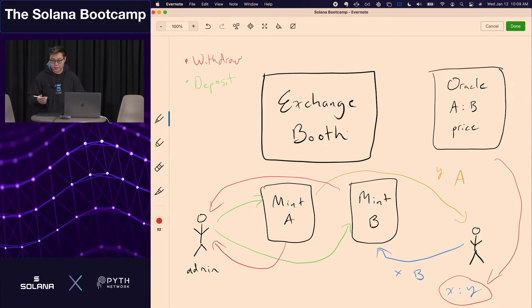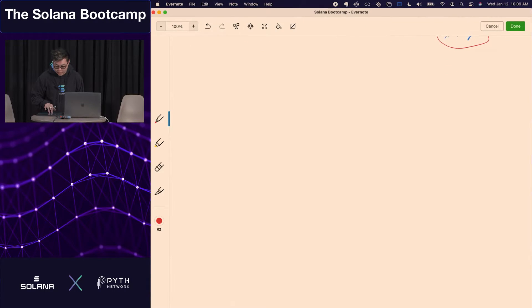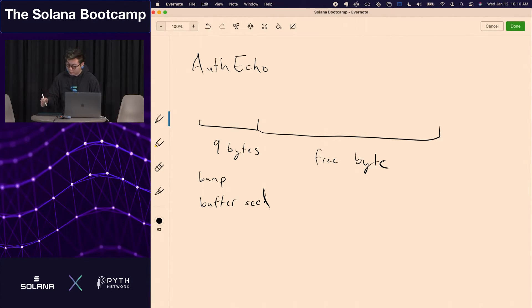The way in which you guys can represent this is not super important. This boot camp is sponsored by Pyth, so you could use something like Pyth to represent the oracle price. You could also use something like your echo program. So just a really simple example of how you can use echo program to represent that oracle price, is that in your echo buffer, let's just say that you want to use the authorized buffer, the auth echo, you have some nine bytes that are just metadata. This is just your bump seed and your buffer seed. And then you have a remaining free amount of data that you can store stuff in. What you could do here is you could actually just store the exchange rate. All of this stuff can just be represented as some struct that you write into this free bytes section. So one way in which you can implement that oracle component is by populating an authorized echo.